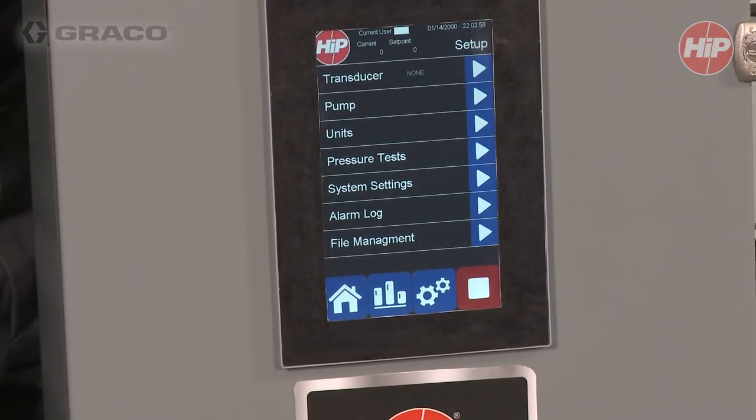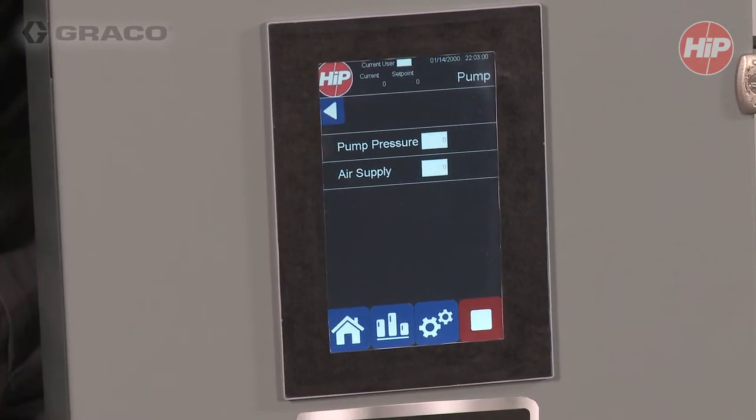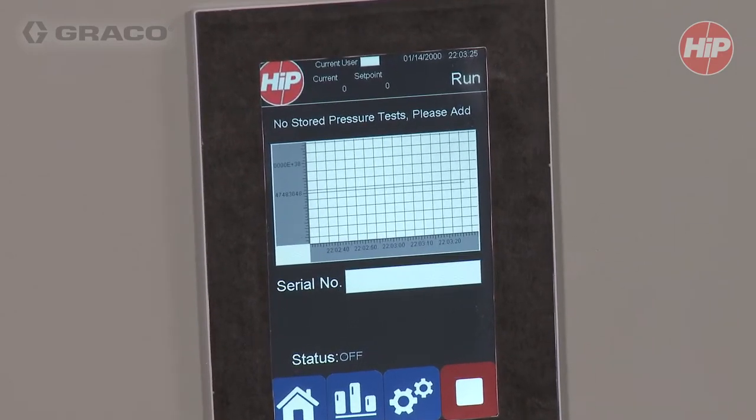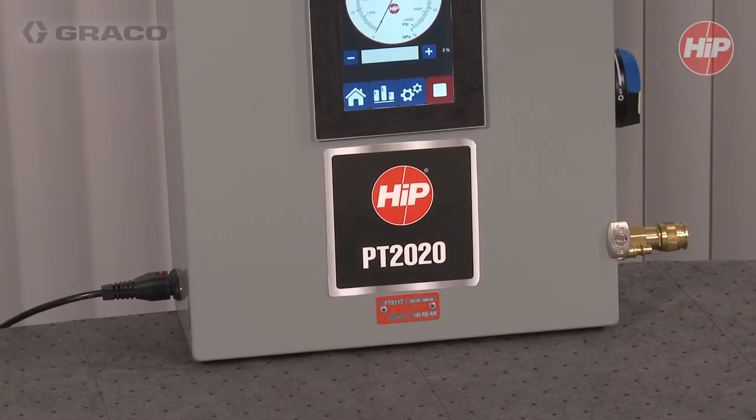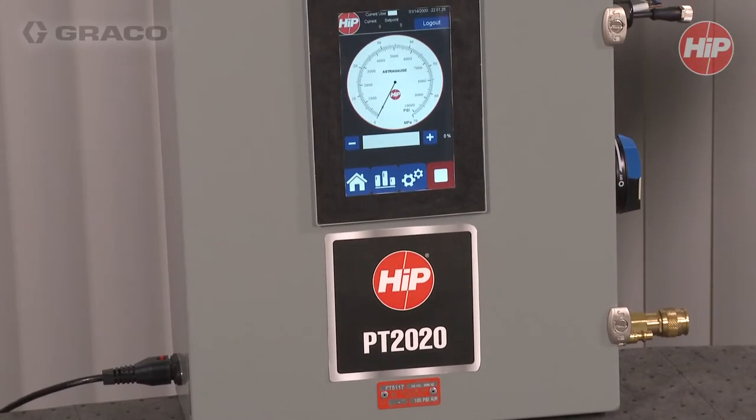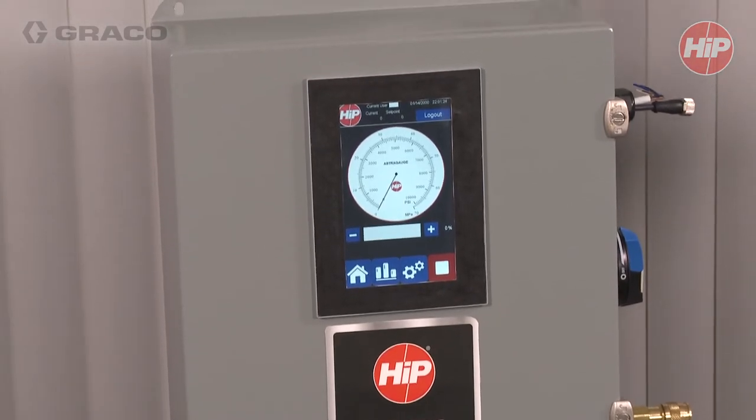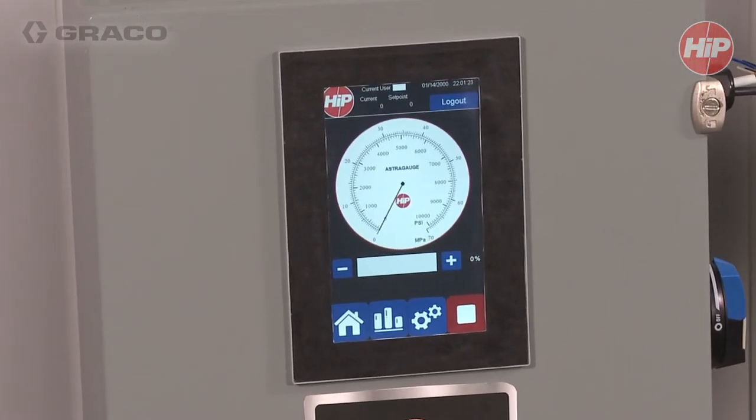The PT-2020 comes with an easy-to-use touchscreen interface and one of the key features is the ability to generate test reports. It comes in five different pressure ratings and can be configured to run one or two pumps such as a main pump and a secondary fill pump.